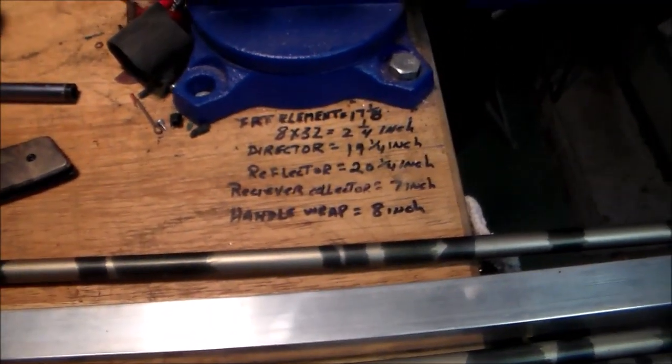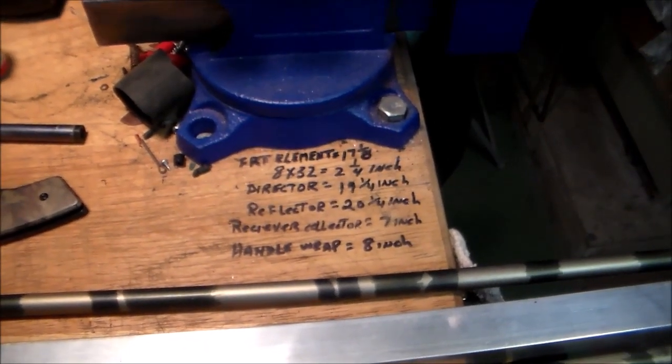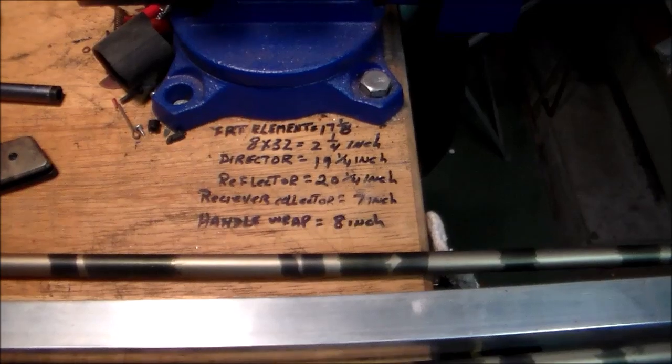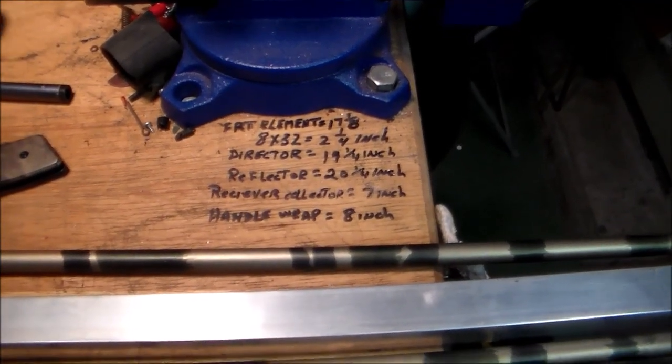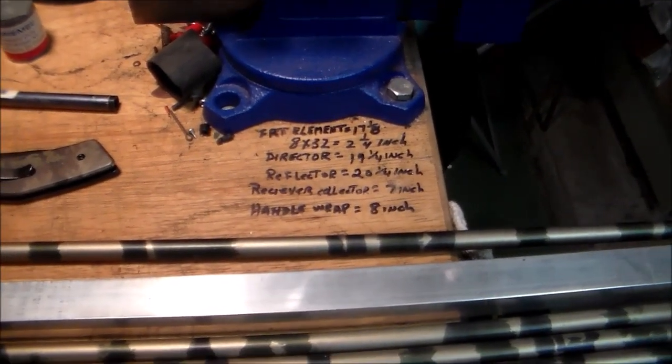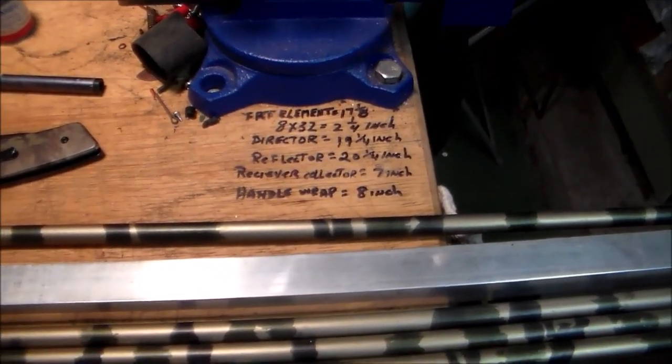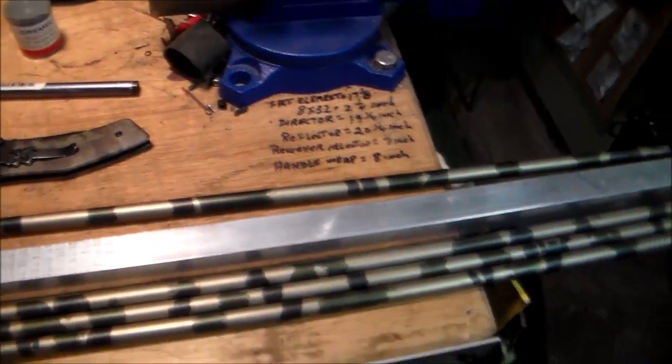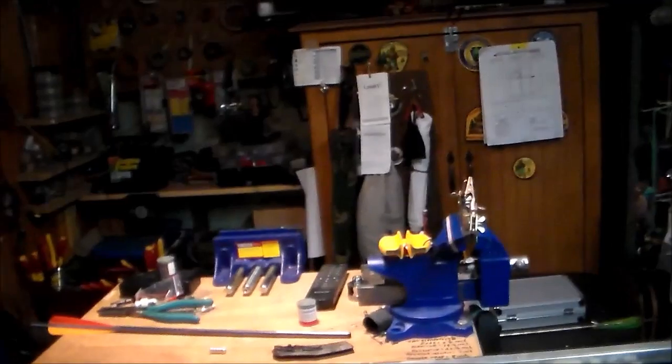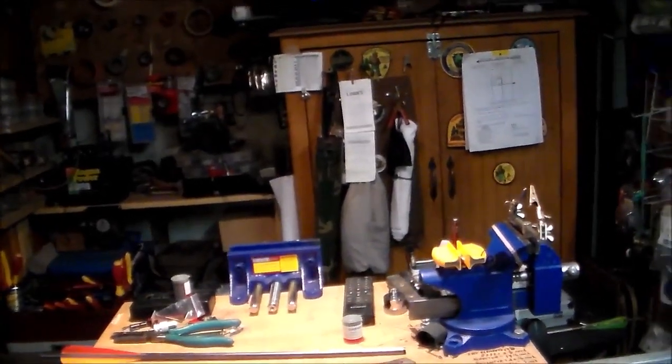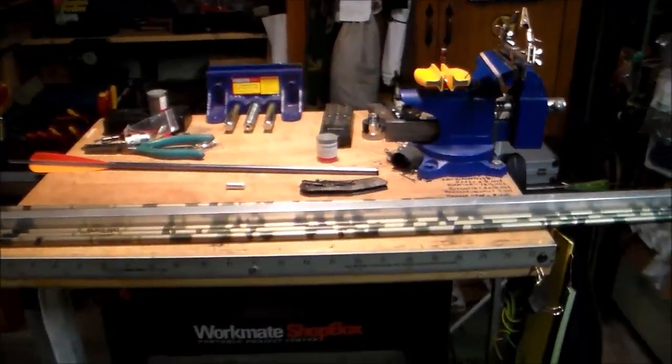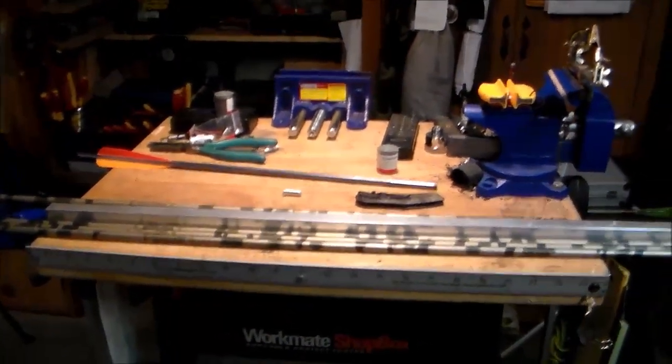These things are all broken down in size to the way the Yagi is. I have this little cheater table right here. The cheater table tells me how long the front element when you have a three element, the director at 19 and a quarter, the reflector at 20 and a quarter, the receiver collector, and the handle wrap which is about eight inches. Now I make handle wrap out of this foam that they use for hot water pipes. So we're going to get started on this and I'll take you step by step.